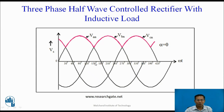At omega t equal to 5 pi by 6 plus alpha, the gate pulse is applied to T2. Once T2 conducts, phase VBn appears across the load. T2 continuously conducts up to 9 pi by 6. Before the end of the half-cycle, the next pulse is applied to thyristor T3. Once T3 conducts, the previous thyristor turns off due to natural commutation, and phase VCn appears across the load. In this mode, the load current flows through the converter continuously — this is the continuous conduction mode.